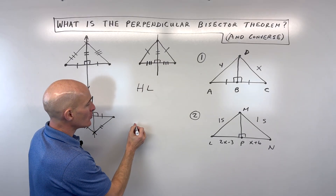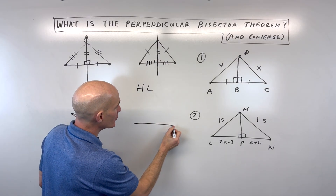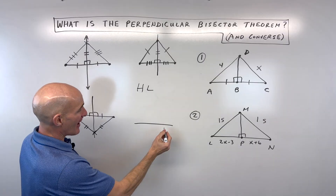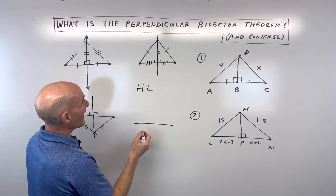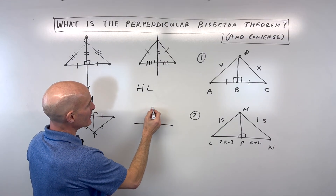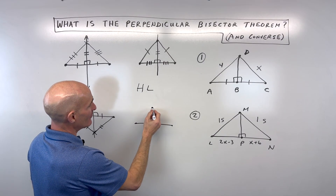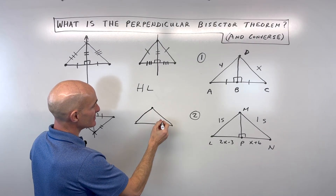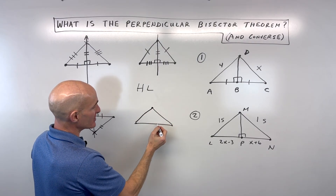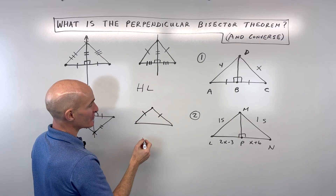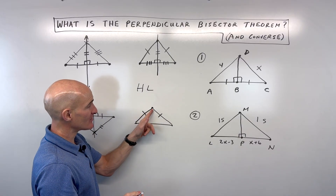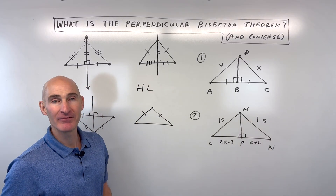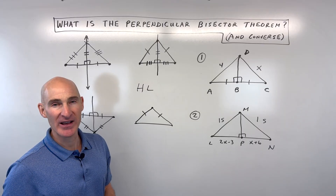Let's look at that again — kind of like a replay in sports. We have our segment and a point that's not on that segment. We draw two segments to the endpoints of the original segment and find out they're the same length. What does that tell us about this point? It must lie on the perpendicular bisector.